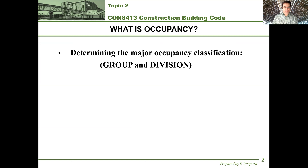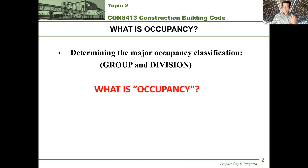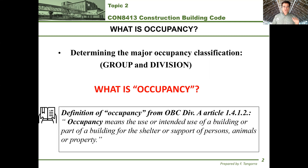The topic today is major occupancies of a building. We'll deal with figuring out the major occupancy of a building, but first we should get to what the occupancy of a building actually is. Luckily for us, the building code has a whole portion dedicated to providing definitions. If you go to Division A, you will find in Article 1.4.1.2 a whole list of definitions in alphabetical order, so all you have to do is find the word occupancy or its definition.